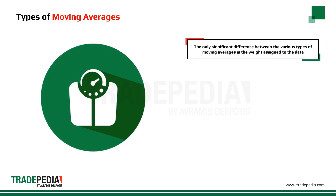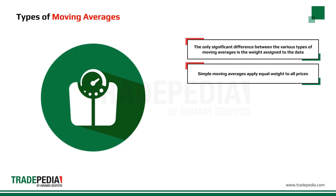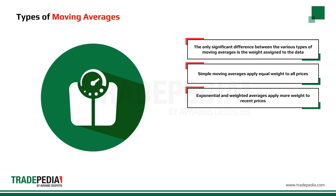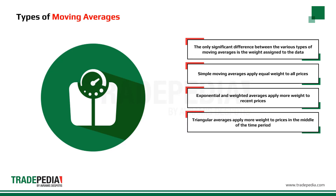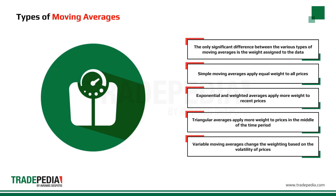The only significant difference between the various types of moving averages is the weight assigned to the data. Simple moving averages apply equal weight to all prices. Exponential and weighted averages apply more weight to recent prices. Triangular averages apply more weight to prices in the middle of the time period. Variable moving averages change the weighting based on the volatility of the prices.